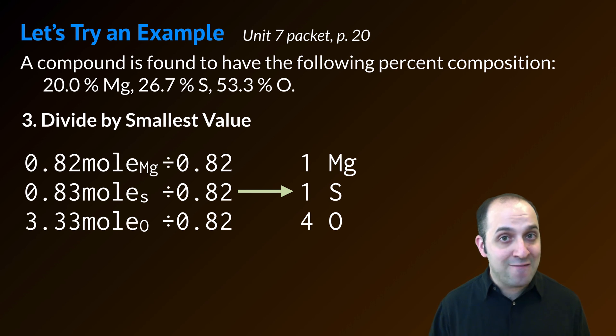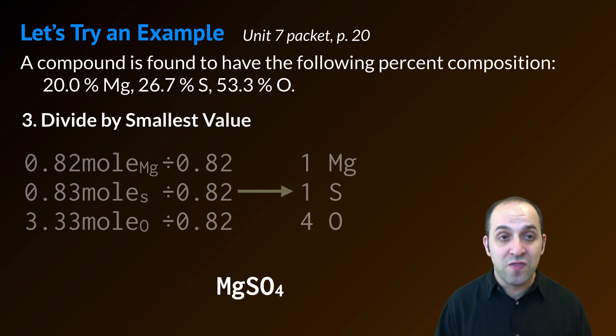If I had a number like 2.5 in here, I would then need to multiply everything by another number until everything was a whole number, but I don't have that here. Everything is already a whole number, and so my empirical formula for this compound is MgSO4. Does this make sense? If it doesn't, write down any questions that you have before we wrap up.